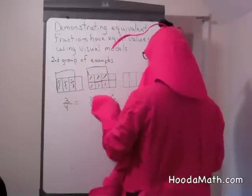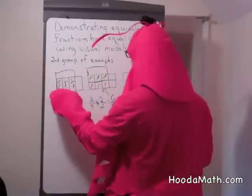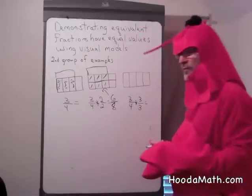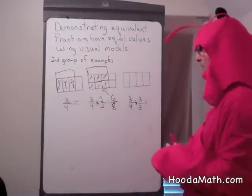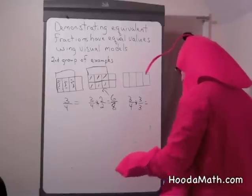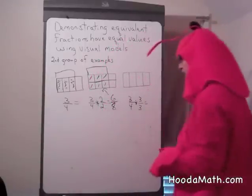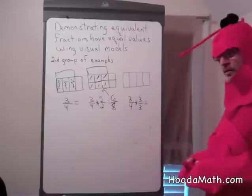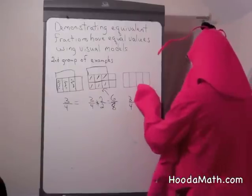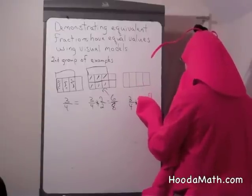And this would be 6 eighths. 6 eighths is the same amount of space as 3 fourths. Now if we multiplied 3 fourths by another form of 1 — 3 over 3, or 3 thirds — we would get 9 twelfths.